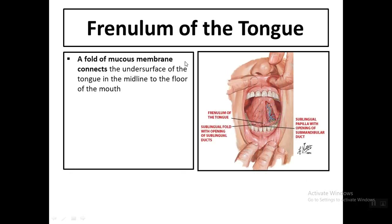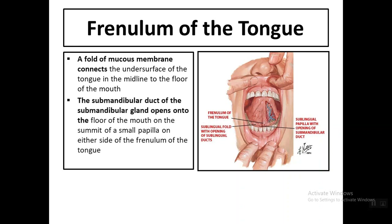On the inferior surface of the tongue, at the midline, there is a fold of mucous membrane called the frenulum of the tongue. It connects the under surface of the tongue in the midline to the floor of the mouth. On both sides of this frenulum runs the submandibular duct.